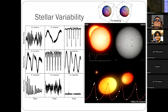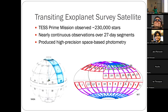When I say stellar variability, I'm talking about anything that is periodic, being very broad in terms of physical mechanism. To study stellar variability, we're using data from the Transiting Exoplanet Survey Satellite, TESS, specifically from the prime mission which observed 230,000 stars across nearly the entire sky every two minutes — nearly continuously for at least 27 days before the spacecraft pans to another region. This produces a lot of high-precision space-based time series photometry.